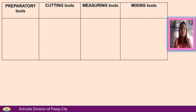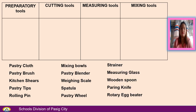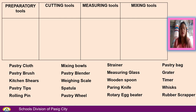These are the tools to classify, namely: pastry cloth, pastry brush, kitchen shears, pastry tips, rolling pin, mixing bowls, pastry blender, weighing scale, spatula, pastry wheel, strainer, measuring glass, wooden spoon, paring knife, rotary egg beater, pastry bag, grater, timer, whisk, and rubber scraper.